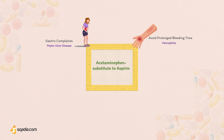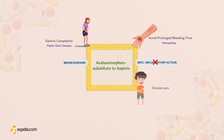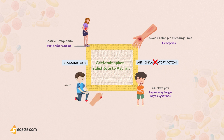Acetaminophen is preferred for patients in whom prolongation of bleeding time is disadvantageous, such as people with hemophilia, and those who do not require aspirin's anti-inflammatory action. It is also preferred in patients in whom aspirin precipitates bronchospasm. Acetaminophen is the analgesic and antipyretic of choice for children with viral infections like chickenpox, because aspirin may trigger Reye's syndrome — a rare disorder causing brain and liver damage. It may also be used in gout patients taking uricosuric agents like probenecid or sulfinpyrazone, since acetaminophen does not antagonize these agents, whereas aspirin reduces their efficacy.